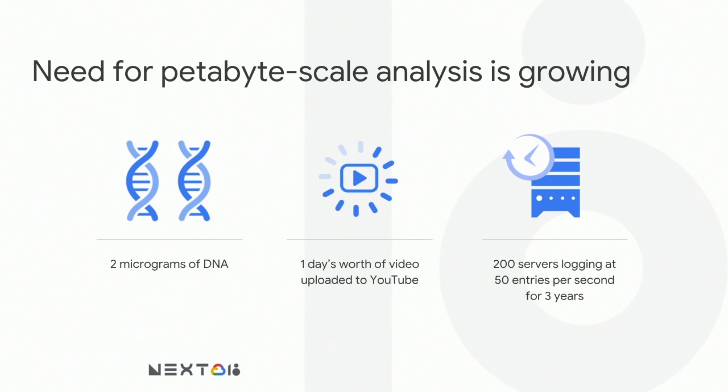If you're in the genomics field, a petabyte of data is just about 2 micrograms of DNA if you try to sequence it. From Google's standpoint, a petabyte is how much video gets uploaded to YouTube on a daily basis. You might say you don't do genomics and your company isn't Google. But think about application servers — many companies have hundreds. 200 servers logging website visitors at 50 entries a second: if you don't have a petabyte of data now, in three years with 200 application servers, you will. So even if you're not analyzing petabytes today, you will soon.